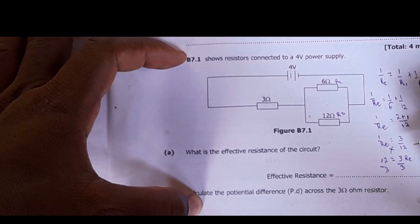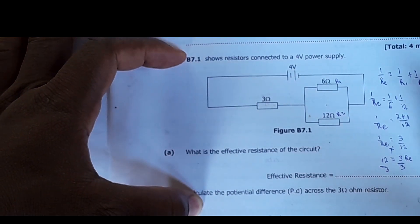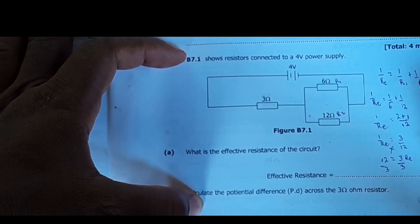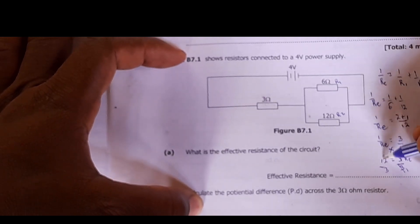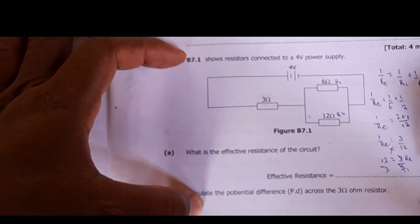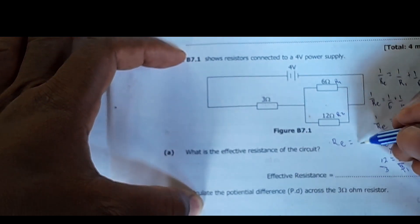We multiply by the reciprocal of 3, which is 1/3 — though this can be confusing if the foundation isn't well laid at grade 8. So we simply say divide this coefficient on both ends of the equation: 3 divided by 3 is 1, and 3 into 12 gives us 4. So Re is equal to 4 ohms.